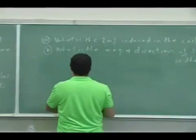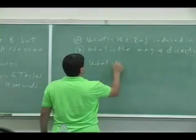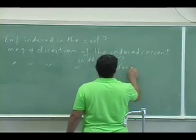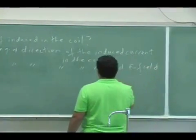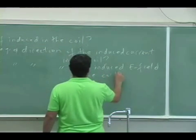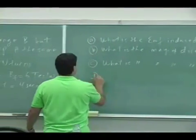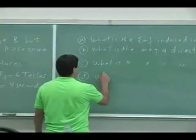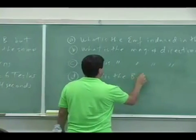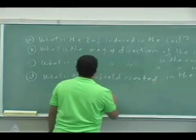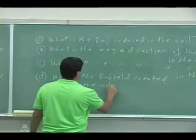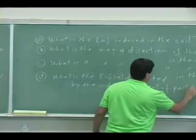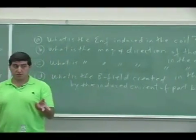And then I can say what is the magnitude and direction of the induced electric field, E field in the coil. And further, I can also ask, what is the magnetic field created by this induced current? What is the B field created?